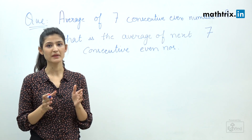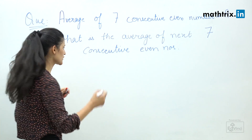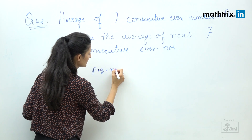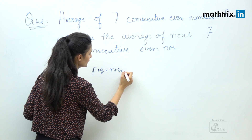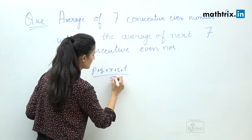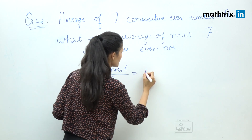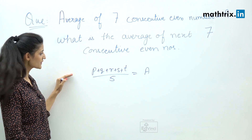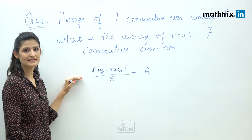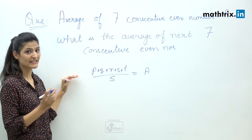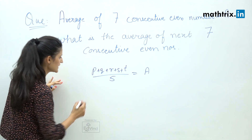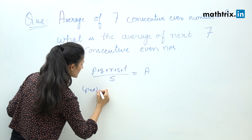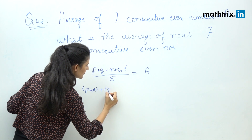We write this as: p plus q plus r plus s plus t, divided by 5, equals a. Now let's say each of the values is increased by d, so we get p plus d, q plus d, r plus d, s plus d, and t plus d.